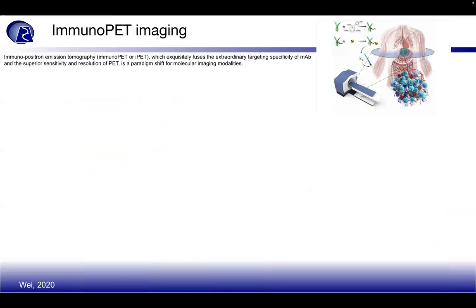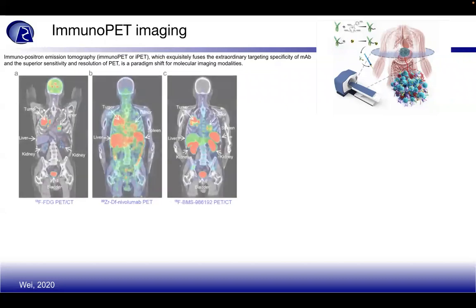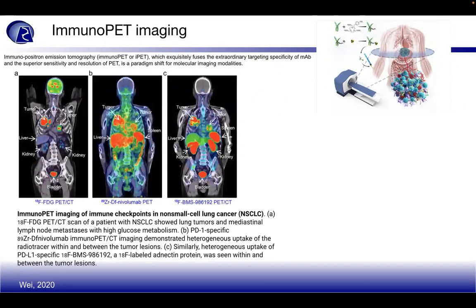Moving to immunoPET imaging: immunopositron emission tomography (iPET) fuses the extraordinary targeting specificity of a monoclonal antibody with the superior sensitivity and resolution of PET, representing a paradigm shift for molecular imaging. Whole body scans can be obtained. In non-small cell lung cancer, an F-18 FDG PET-CT showed lung tumors and mediastinal lymph node metastases with high glucose metabolism. A PD-1 specific Zirconium-89 nivolumab immunoPET-CT demonstrated heterogeneous uptake of the radiotracer between tumor lesions, and F-18 BMS PET-CT uptake was seen within and between tumors.